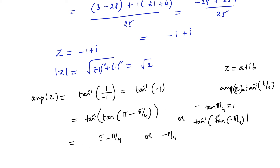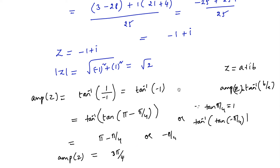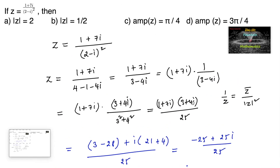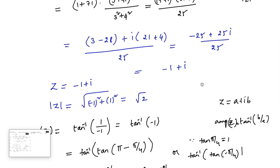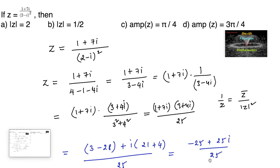Considering the range 0 to 2π, π minus π/4 is considered, that is 3π/4. So amplitude of z is equal to 3π/4, which is the fourth option.